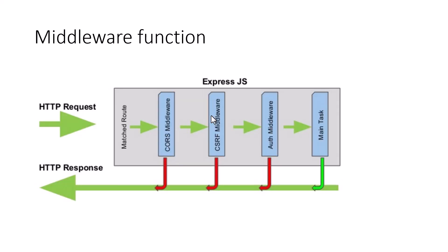So it looks something like this: you have the HTTP request coming in, and there is a main task that fulfills your HTTP request and sends the response back. But in between, you can have multiple middleware functions. These middleware functions can do some checks, some logging. In this case, there is a CORS middleware, a CSRF middleware, and an authentication middleware. At any stage, a middleware function can reject the response and send it back to the end user.